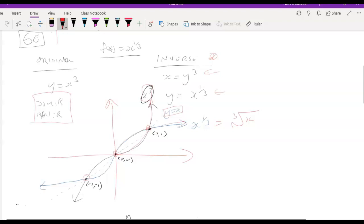You can see that that blue graph, it's now red because I wrote on it, but that blue graph, that x to the third graph, is the reflection of that x cubed graph.